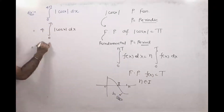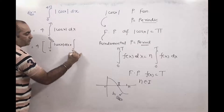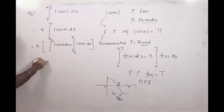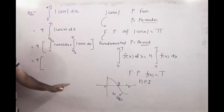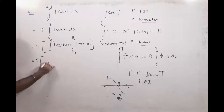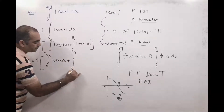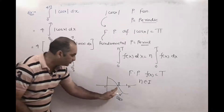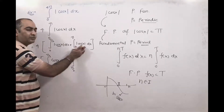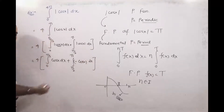So at π/2 we have to separate. We write 4 times the quantity: integral from 0 to π/2 of modulus cos x dx, plus integral from π/2 to π of modulus cos x dx. From 0 to π/2, cos x is positive, so we can remove the modulus: we get integral from 0 to π/2 of cos x dx. From π/2 to π, cos x is negative, so the inside quantity is negative — when we remove the modulus we multiply by minus, giving minus of cos x dx.